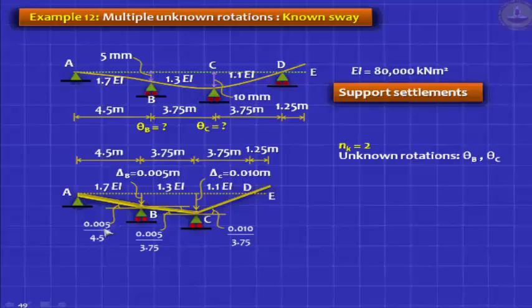You will write it as 0.005 divided by 4.5. BC also undergoes a clockwise chord rotation because delta C is more than delta B. You will write it as 10 mm minus 5 mm, still 5 mm, divided by this span: 0.005 divided by 3.5.